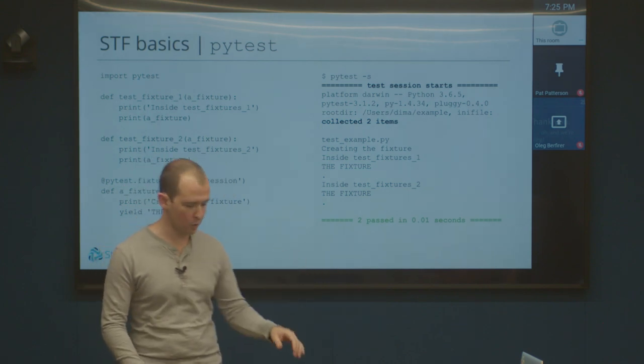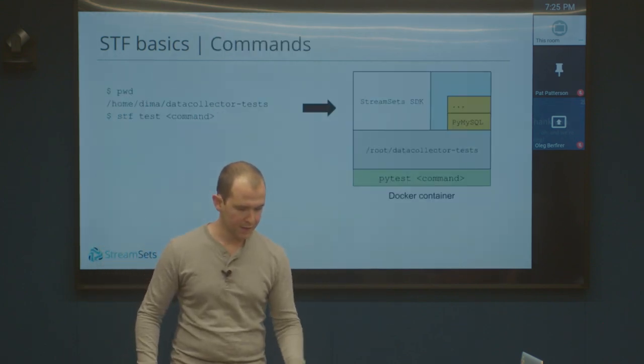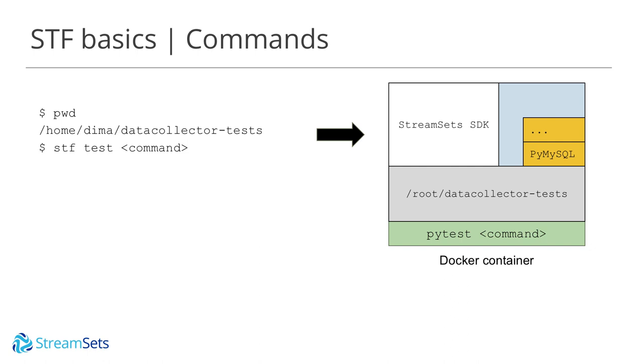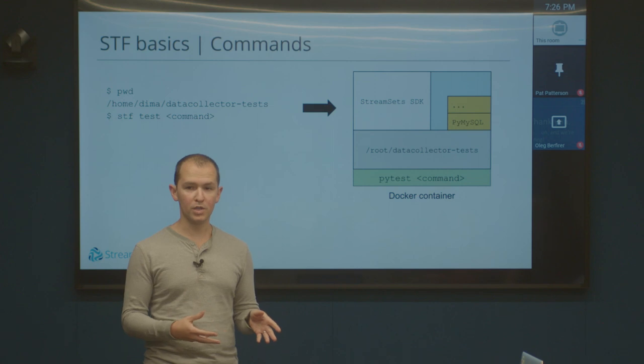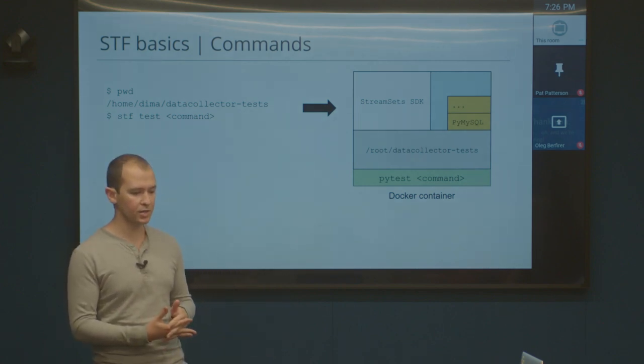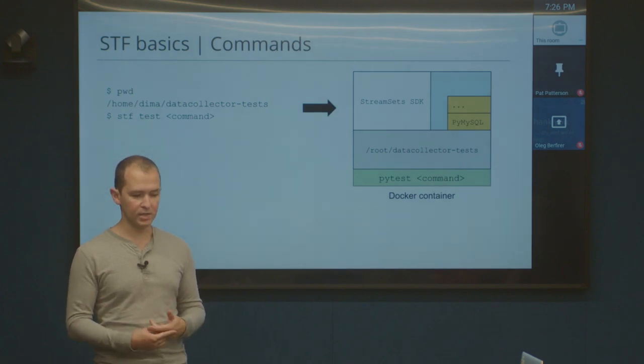The other piece that's really important is the Docker integration. One part of how we use Docker: we heavily use Docker when testing DataCollector because we have the ability to spin up StreamSets DataCollector instances with certain stage libraries preloaded. They don't have to be prebuilt into the container — we have ways of actually merging in the different stage libraries we need for a given container. The second way we use Docker containers is actually when running our test framework itself.